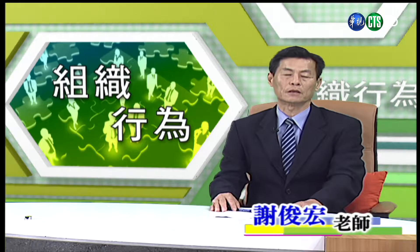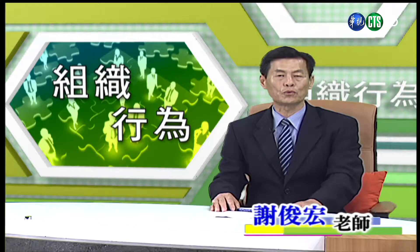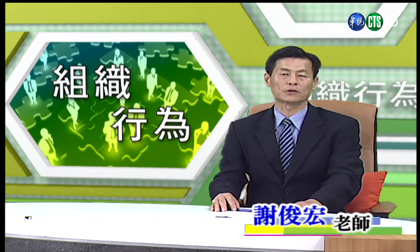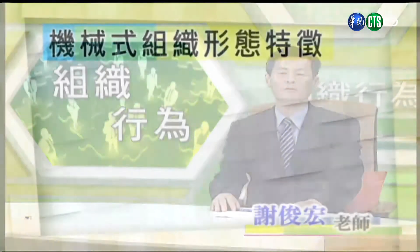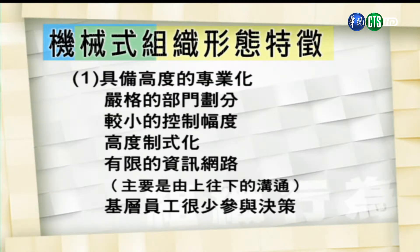机械式组织模式是指具有固定而严谨架构的组织形态。这种组织形态的特征如下：一、具备高度的专业化、严格的部门划分、较小的控制幅度、高度的集权化，以及有限的资讯网络。这个网络主要用于由上往下的沟通，以及基层员工很少参与决策。